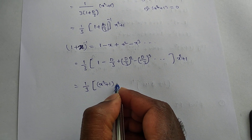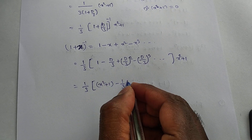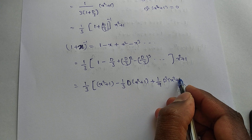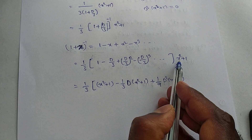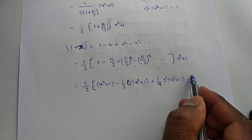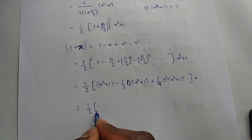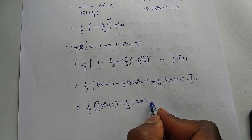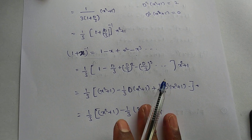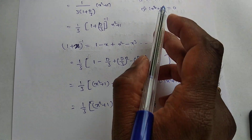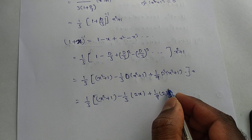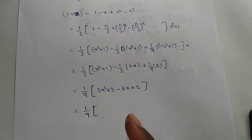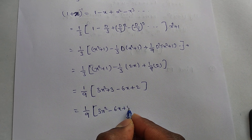Multiplying out: (1/3)·[1·(x²+1) - (1/3)·D(x²+1) + (1/9)·D²(x²+1)]. Substituting: (1/3)·[(x²+1) - (1/3)·(2x) + (1/9)·(2)] = (1/3)·[x²+1 - 2x/3 + 2/9]. Simplifying gives PI = (1/9)·(3x² - 6x + 5).